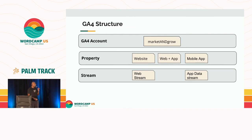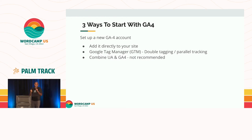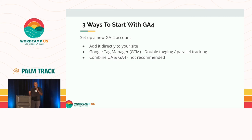This is how the GA4 account structure will look. You have the main account and then you have different properties. You can combine website, web app, and mobile app — or separate them and play around with it. There are three ways you can get started today. If you're using WordPress, go ahead and add it directly through a plugin. Ideally I would prefer you use GTM, Google Tag Manager — there is a session right after this on Tag Manager. Or you can combine UA and GA4, which is a quick and easy way to send data into GA4.